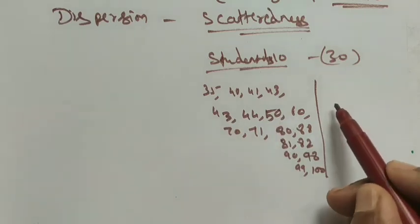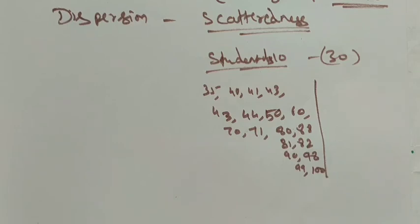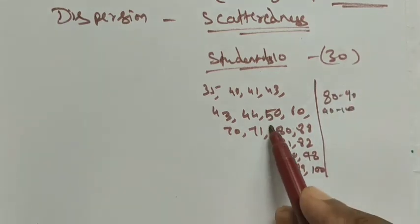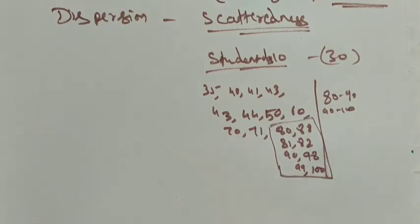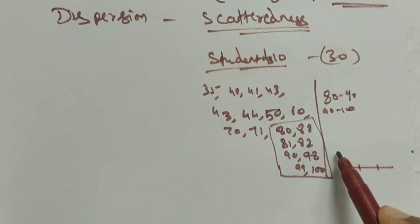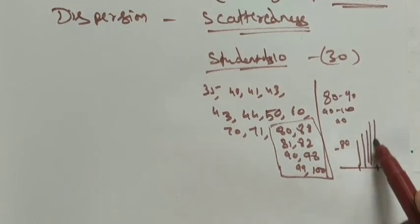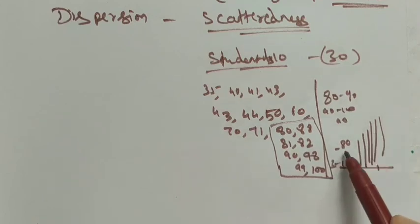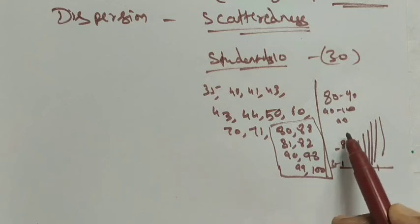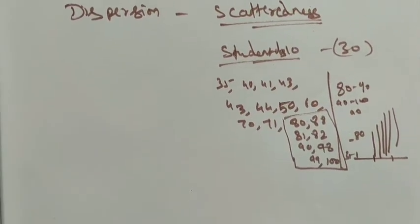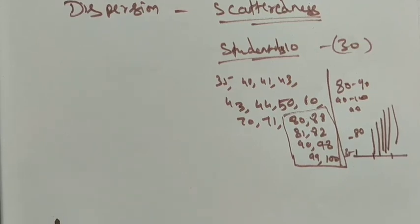If you select only the topper students — for example those who scored between 80 and 90 — the marks are like 81, 82, 83, 88, and there is not much variance among them. But if you include scores from 35 onwards, there is a lot of variation between students. This spread-out data is what we measure using measures of dispersion, also called measures of variation.